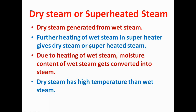Dry steam is generated from wet steam. Further heating of wet steam in a superheater gives dry steam or superheated steam. In a boiler there is equipment known as a superheater. First, water gets converted into wet steam or saturated steam, then further heating of this wet steam gives us superheated steam. When we heat wet steam, the water droplets or moisture present in it get converted into steam and the temperature increases to a higher limit.